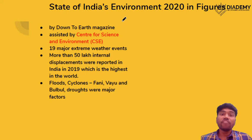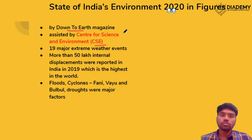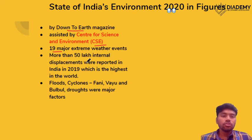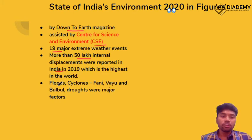The second topic is the State of Environment 2020, given by the CSE, which also publishes a magazine called Down to Earth — an important source for environment and ecology. According to this report, in recent few years there have been 19 major extreme weather events like floods and droughts. More than 50 lakh internal displacements occurred in India, which is the highest in the world, due to flood, cyclones like Bulbul, and droughts.